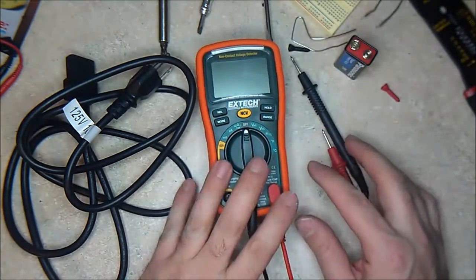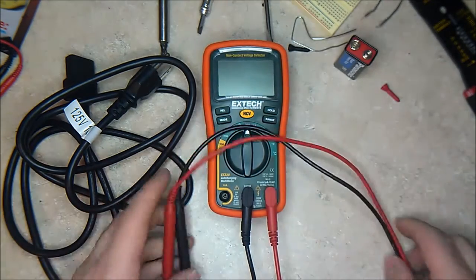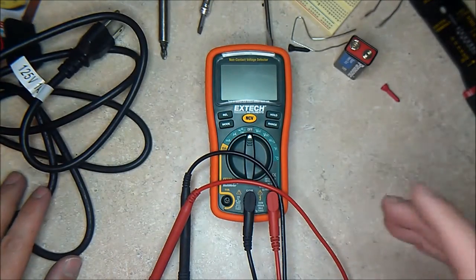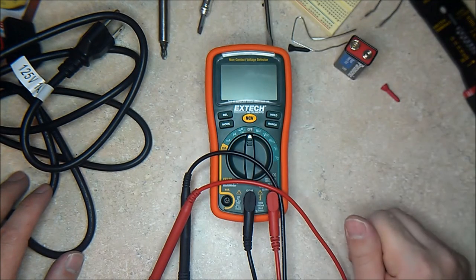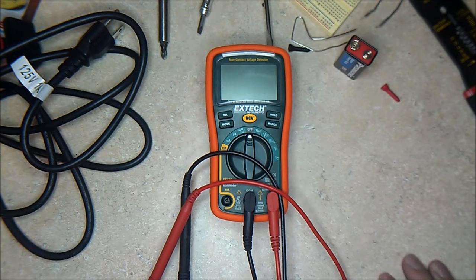And that's it. Just have an auto-ranging multimeter. It will make your life easier. Get something good quality. Something like this costs about 50 bucks, but it will last you a lifetime. So yay for good multimeters. Thank you guys. I'll see you on the field.